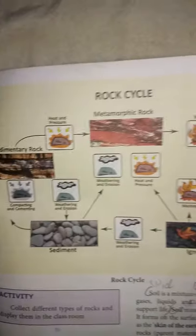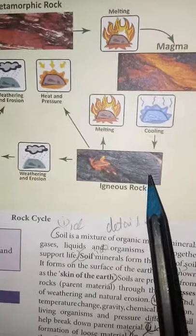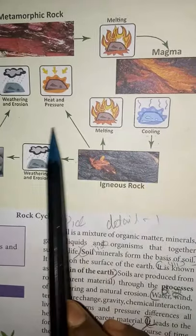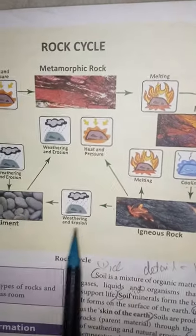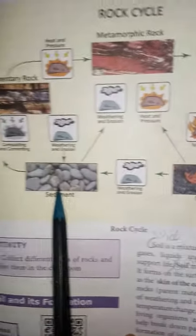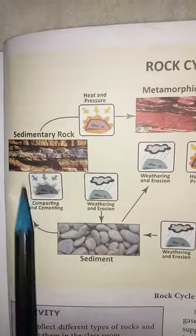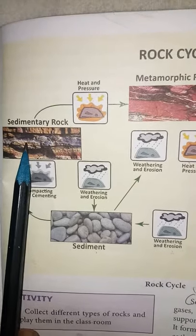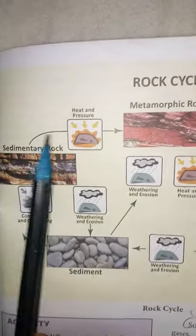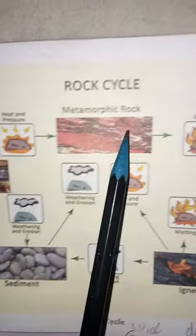Look at this rock cycle diagram. It shows the parent igneous rocks undergoing melting and cooling, then during high heat and pressure, weathering and erosion producing sediments, which form sedimentary rocks. Again, from igneous to sedimentary rock, it gets altered due to high pressure and temperature and becomes metamorphic rocks.